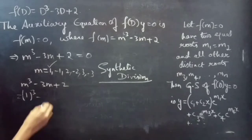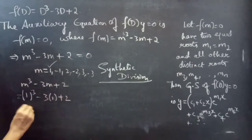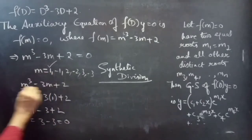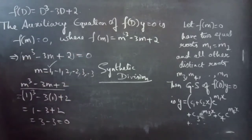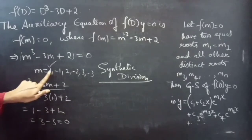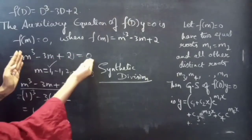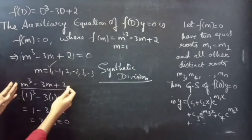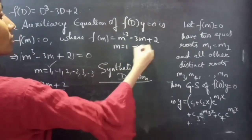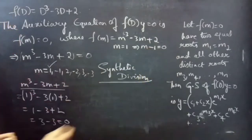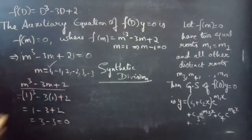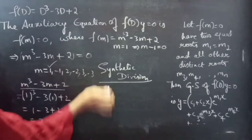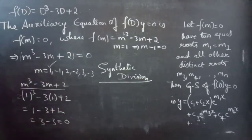1 cubed minus 3 times 1 plus 2 equals 1 minus 3 plus 2, which equals 3 minus 3 equals 0. So m equals to 1 satisfies this polynomial. From this, we get the factor m minus 1. We need to find the next polynomial using synthetic division.